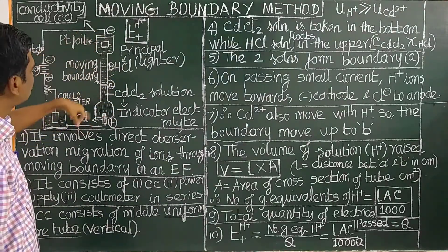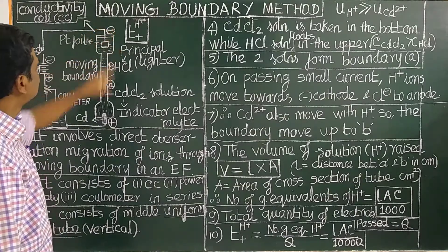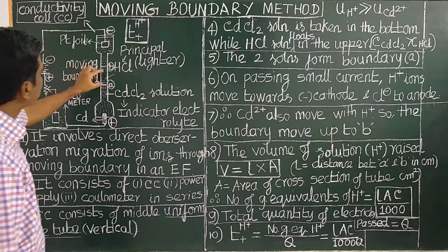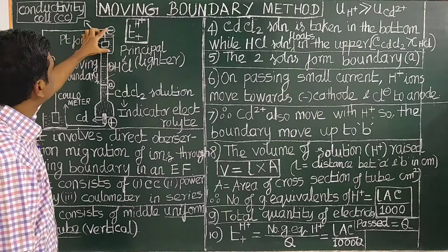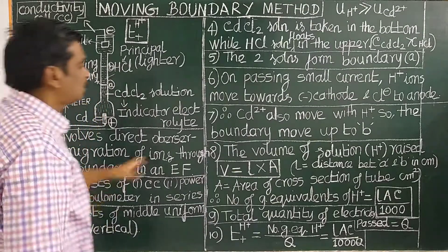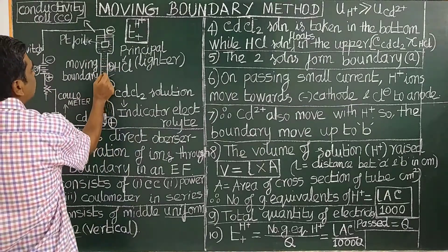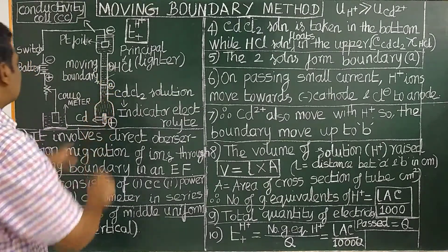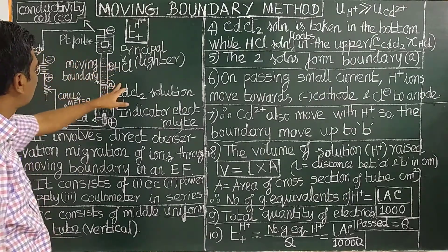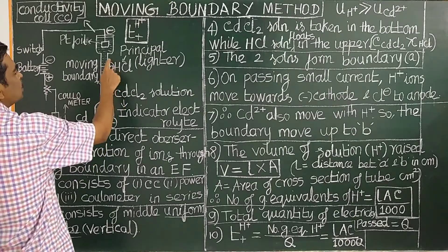On passing current through the conductivity cell, H⁺ ions move towards the cathode. Before electrolysis, the boundary is at position A. After electrolysis, the boundary moves to a new position B.